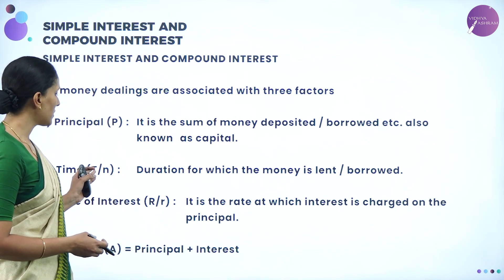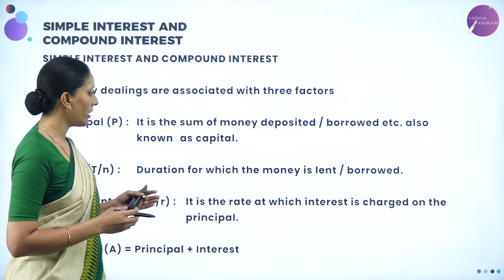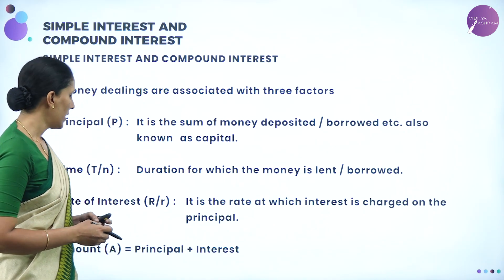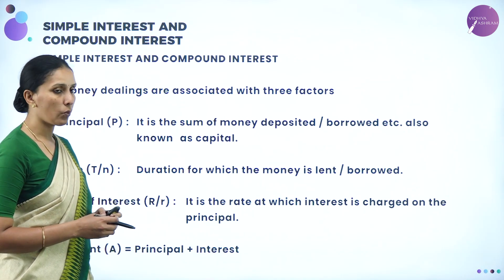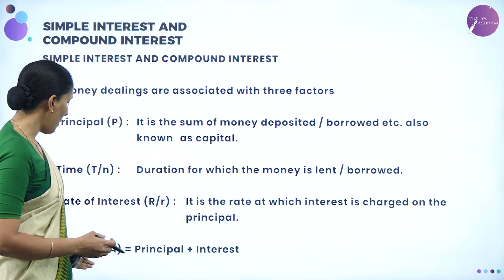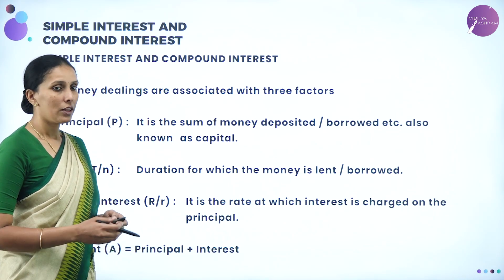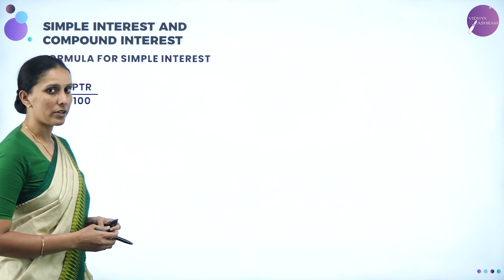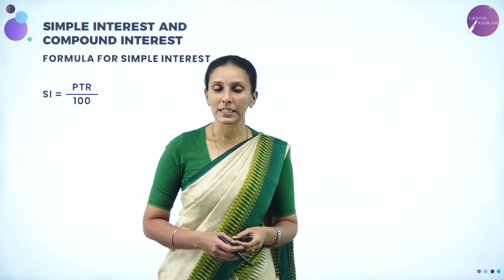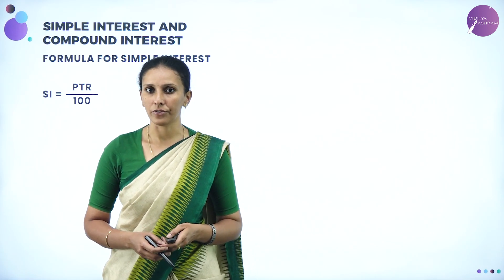Then time, sometimes denoted by T and sometimes by N, is the duration for which the money is lent or borrowed. The rate of interest is the rate at which interest is charged on the principle. Amount is basically principle plus interest. The formula to calculate simple interest is SI = PTR divided by 100, where P is the principle, T is the time period, and R is the rate of interest.